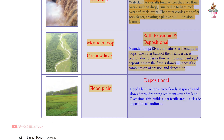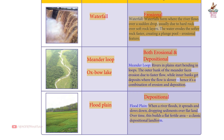Third photograph — Flood plain. Type: Depositional. When a river floods, it spreads and slows down, dropping sediments over flat land. Over time, this builds a flat, fertile area — a classic depositional landform. So the three features are: waterfall (erosional), meander loop (both erosional and depositional), and flood plain (depositional).